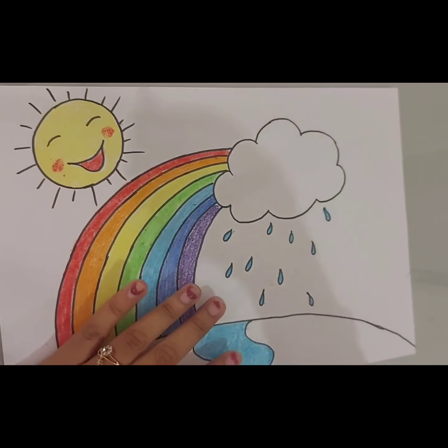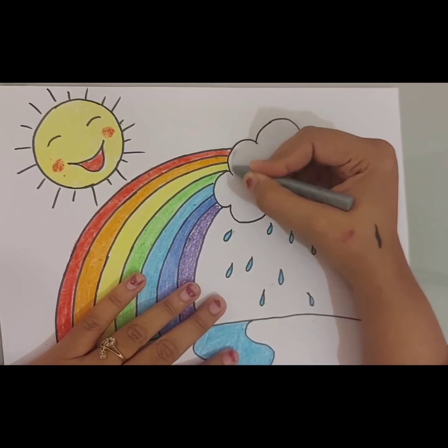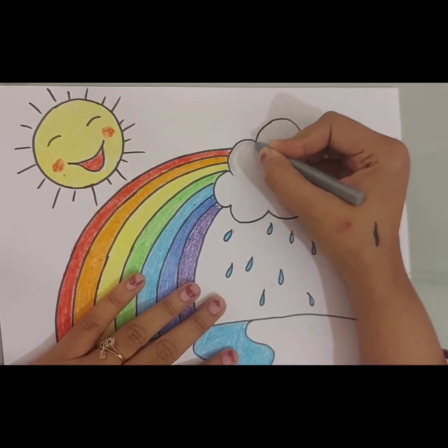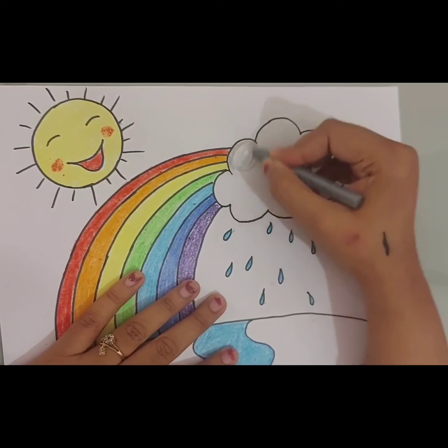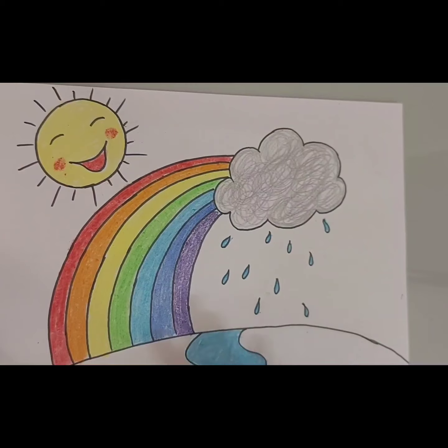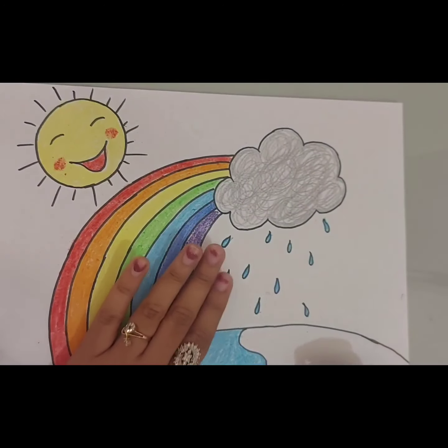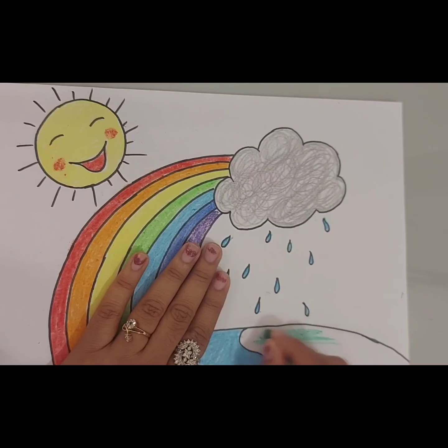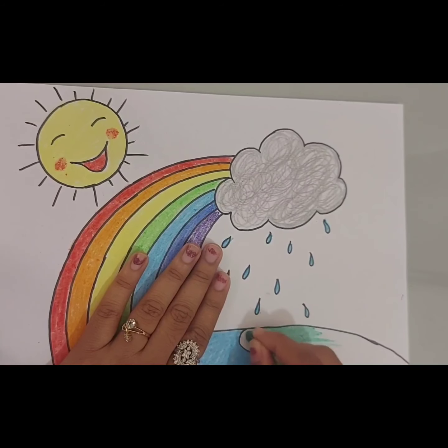Now, I am doing gray color in the cloud to show the rainy cloud. Okay, so I have colored the cloud also. Now, I am going to do some green color in land area. Dark green color.